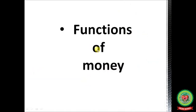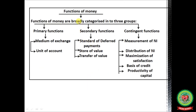Next, functions of money. There are different functions: primary functions, secondary functions, and contingent functions. Under primary functions: medium of exchange and unit of account. Under secondary functions: standard of deferred payments, store of value, and transfer of value. Under contingent functions: measurement of national income, distribution of national income, maximization of satisfaction, basis of credit, and productivity of capital.